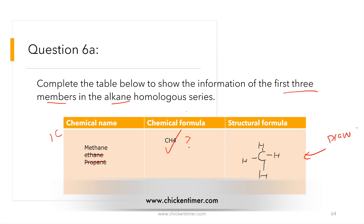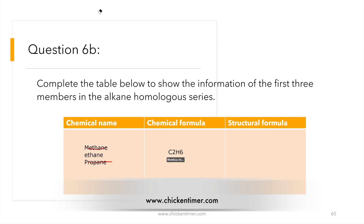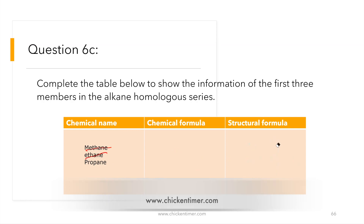CH4. Then if it's ethane, what is the chemical formula? C2H6. Then now propane.